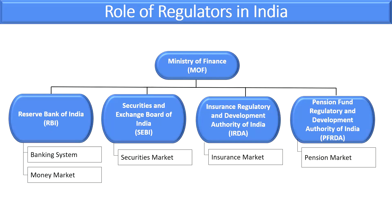All these different regulators — Reserve Bank of India, Securities and Exchange Board of India, IRDA, and PFRDA — come under the Ministry of Finance. RBI takes care of the banking system and money market. SEBI regulates the securities and capital market. IRDA regulates the insurance market. And PFRDA, the Pension Fund Regulatory and Development Authority of India, regulates the pension market. This is our basic regulatory structure.